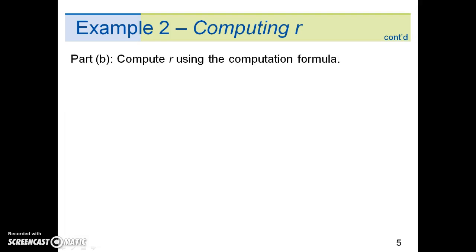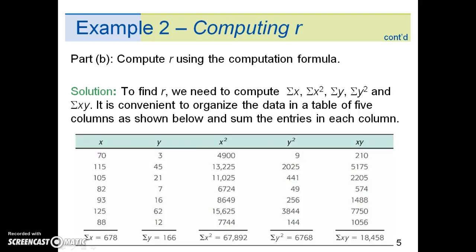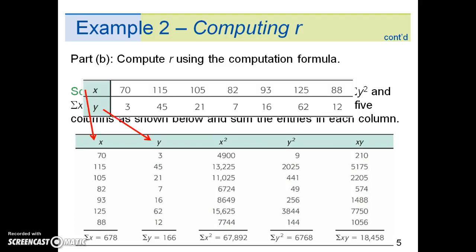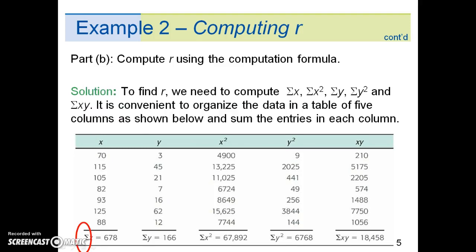In Part B, we'll compute r using the computation formula. The first part of the solution is provided here. To find r, we need the values for x and y, which are simply entered in from the data table. The Greek letter epsilon is the mathematical notation for sum.